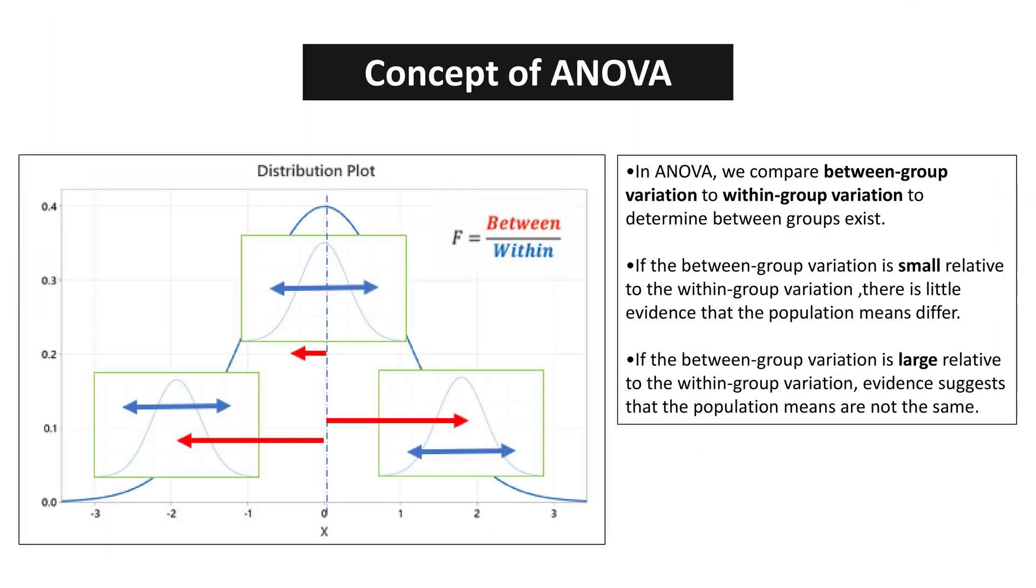In ANOVA, we compare between-group variation to within-group variation to determine if differences between groups exist. If the between-group variation is small relative to the within-group variation, there is little evidence that the population means differ. On the other hand, if the between-group variation is large relative to the within-group variation, evidence suggests that the population means are not the same.